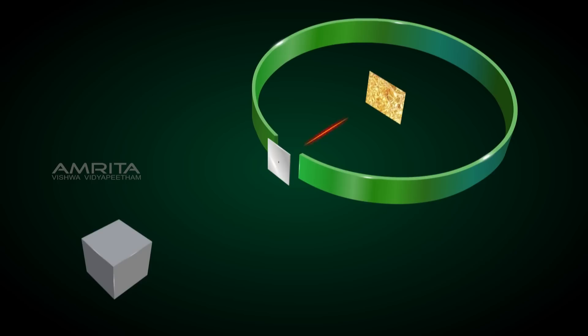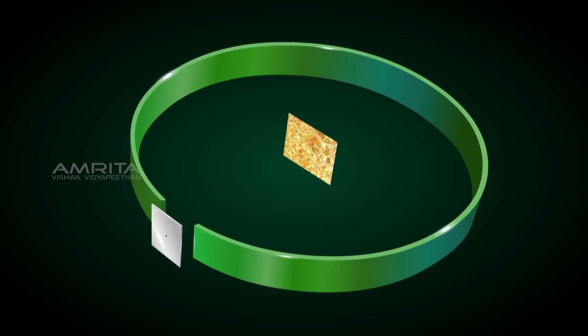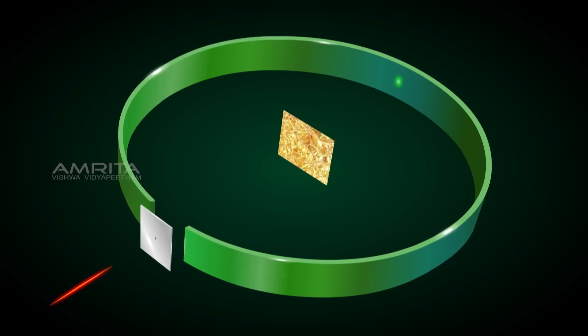They passed through a lead sheet with a small slit and bombarded the extremely thin gold foil. The alpha particles which were scattered were detected using a detector and a circular fluorescent screen coated with zinc sulphide.